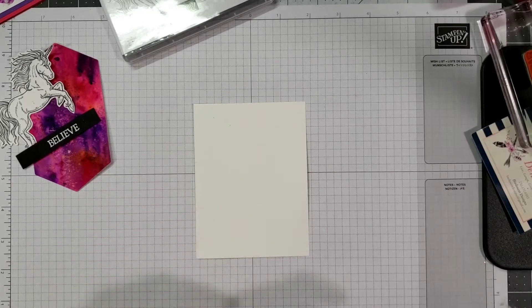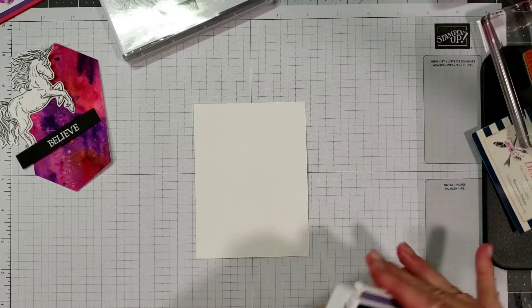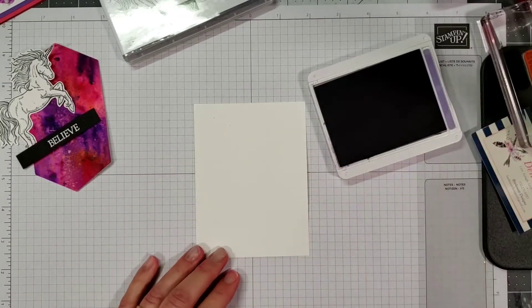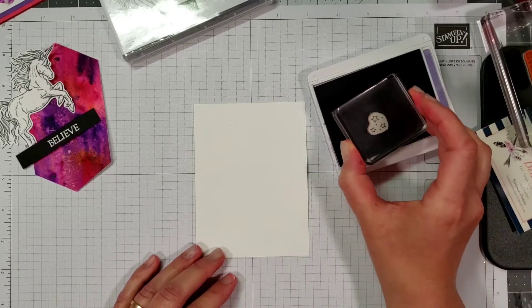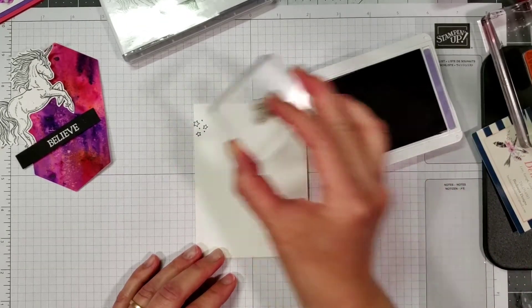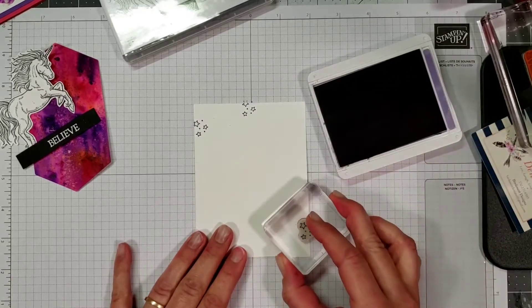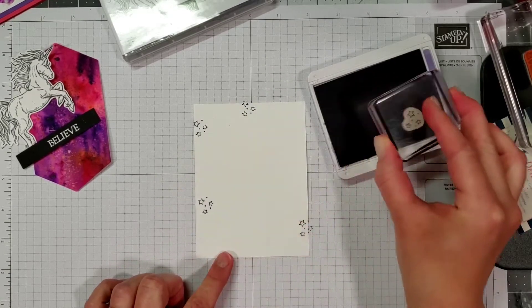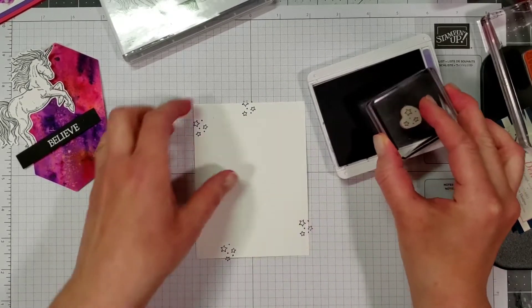Now we're going to use gorgeous grape ink pad with the little stars and we're just going to stamp along the outside edge of the card. There's no sense stamping in the middle because we're not going to see it anyway.